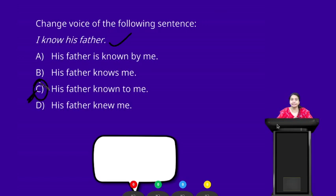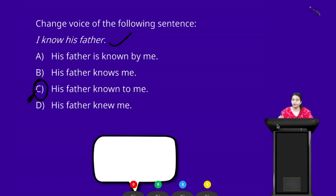Time is up. The sentence we are changing the voice of is 'I know his father.' The correct voice of this sentence is option C — 'his father known to me.' Option C is the correct answer.